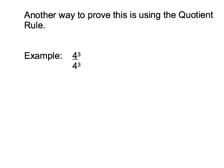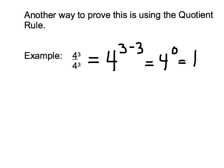Let's take a look at another way to prove this using the quotient rule. If I have 4 to the third power divided by 4 to the third power, already having learned the quotient rule, since these are the same base number of 4, I should be able to take the exponents and subtract them. 4 to the 3 minus 3 power is equal to 4 to the zero power, which we just said should be equal to 1. Anything to the zero power is 1. Now if I take any number and divide it by itself, I get 1.